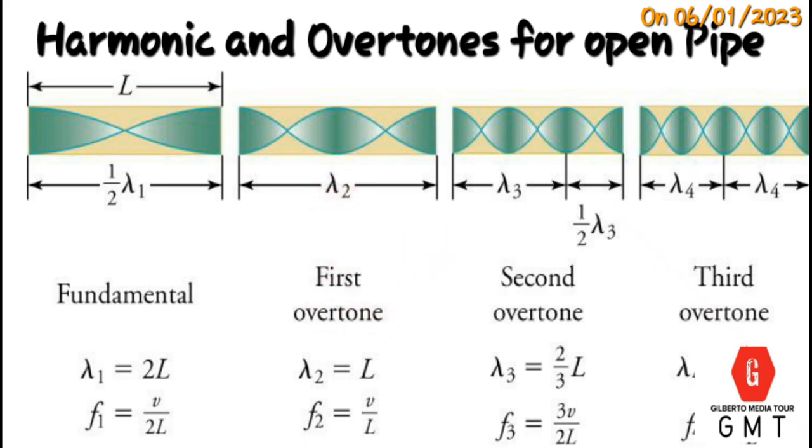For first overtone, length of the tube equals the wavelength and frequency equals V over L. For second overtone, wavelength equals L over 3.